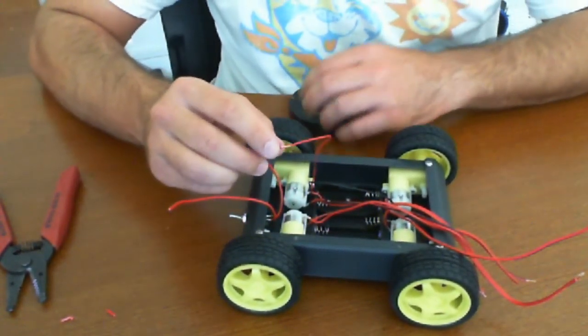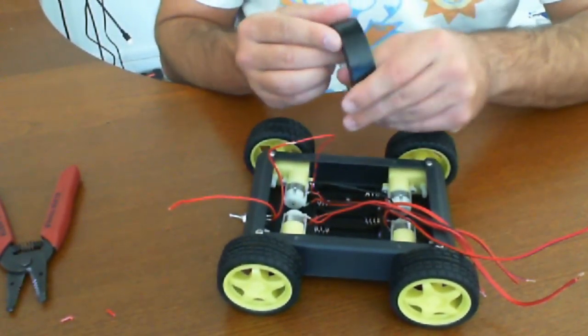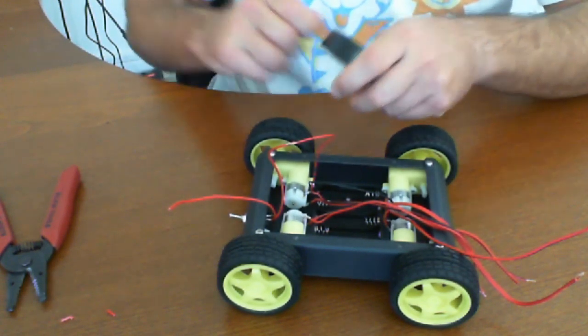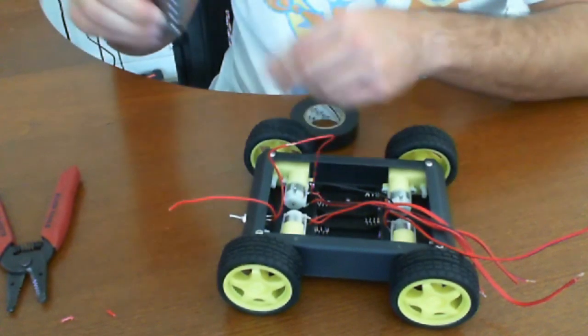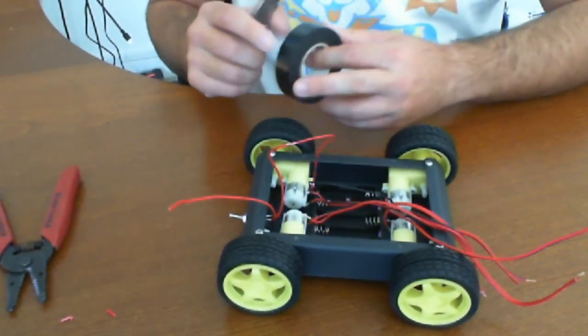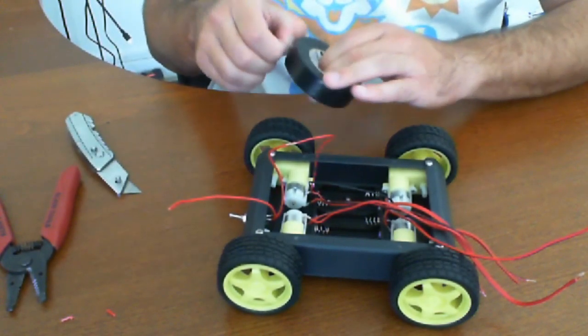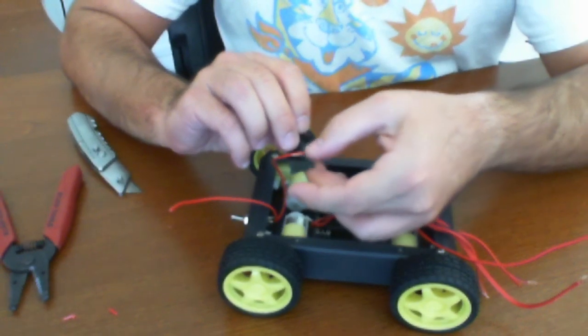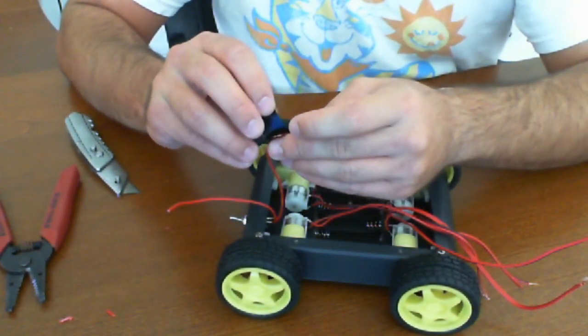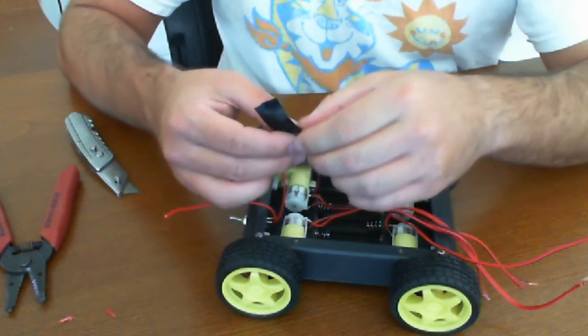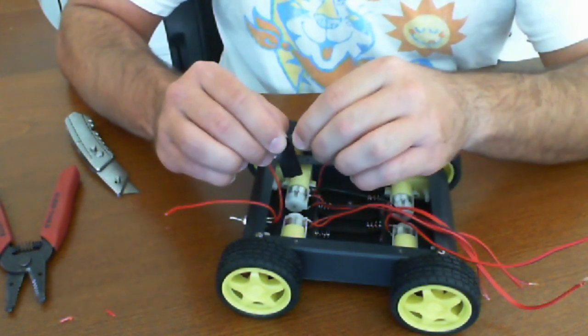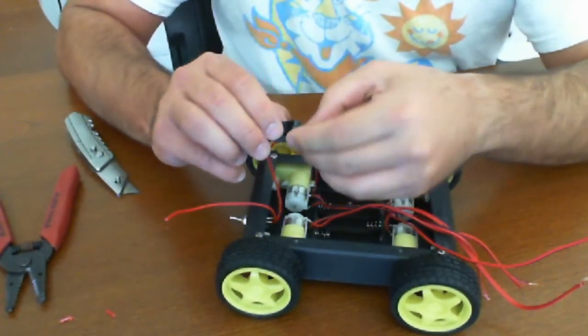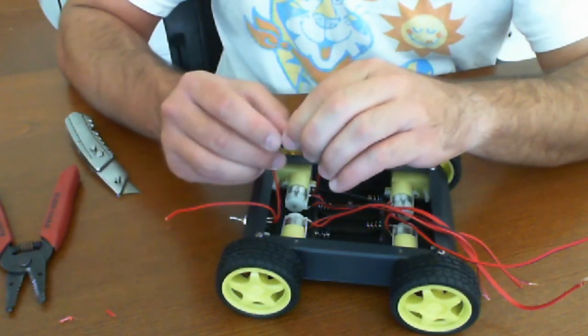Basically you just twist them together, get some basic electrical tape. Now with electrical tape the way it works really well is that you have to get the tape to just stick to itself and then just kind of wrap it around a few times. That's really when it sticks well.